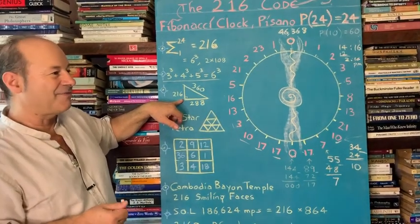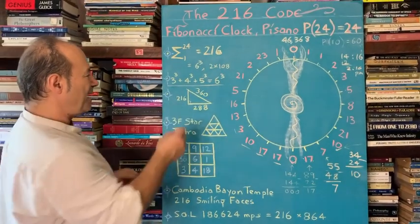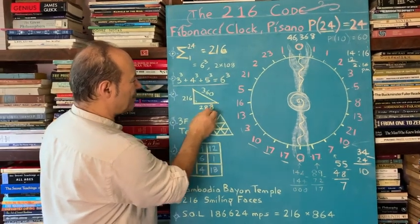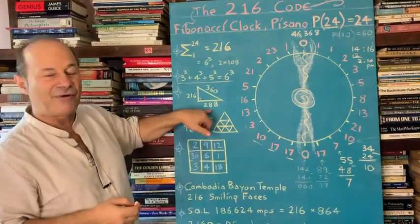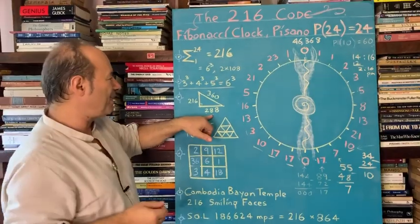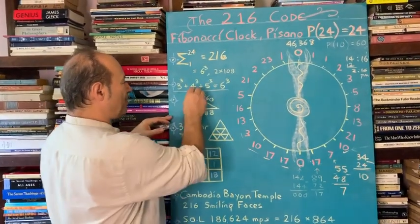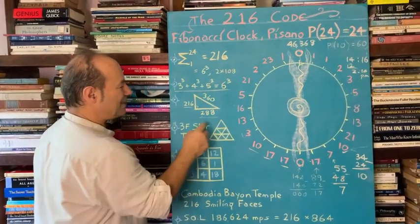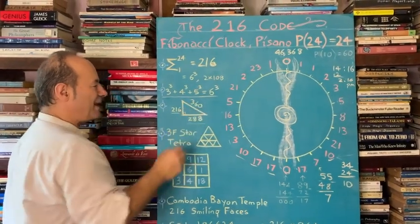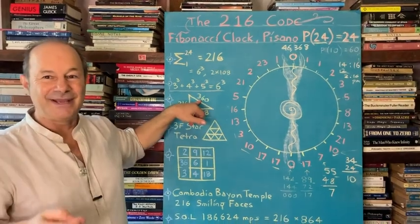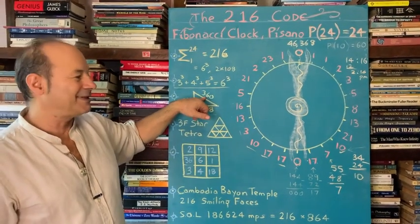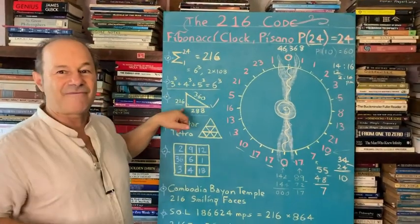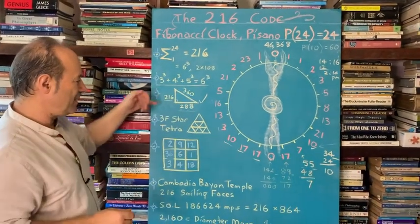And Bruce Cathy, when he done the harmonics of the earth and the ley lines, he noticed that if this is 216 and the longer side is 288, that's double 144, the speed of light harmonic. And this is six cubed. The hypotenuse, according to Pythagoras theorem, is 216² plus 288² equals 360². Now 360 is the harmonics of the circle, 360 degrees. So this is big. This is a whole universe of information in three-dimensional trigonometry.